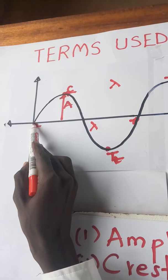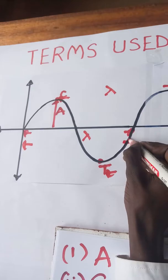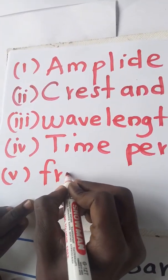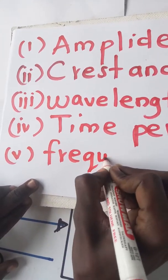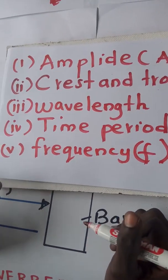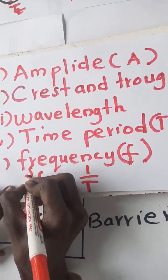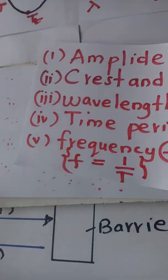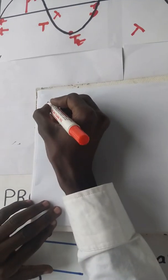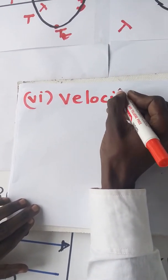We also have time period. Time period is the time used to complete one cycle — the time taken by the wave to travel from this point to this point. We also have frequency. Frequency is the number of complete cycles per unit time. So frequency is equal to one over the time period.